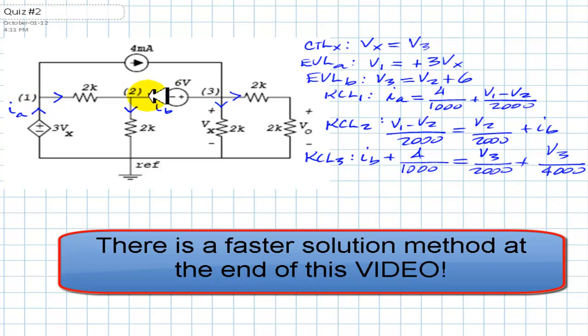V1, V2, V3, Ia, Ib, and Vx. Six unknowns and six equations. Let's go to the calculator.